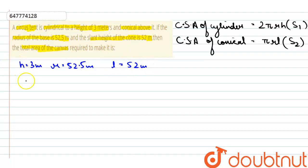So, total area of canvas will be S1 plus S2. 2πrh plus πrL, take common πr. So here is 2h plus L. Now put the values.